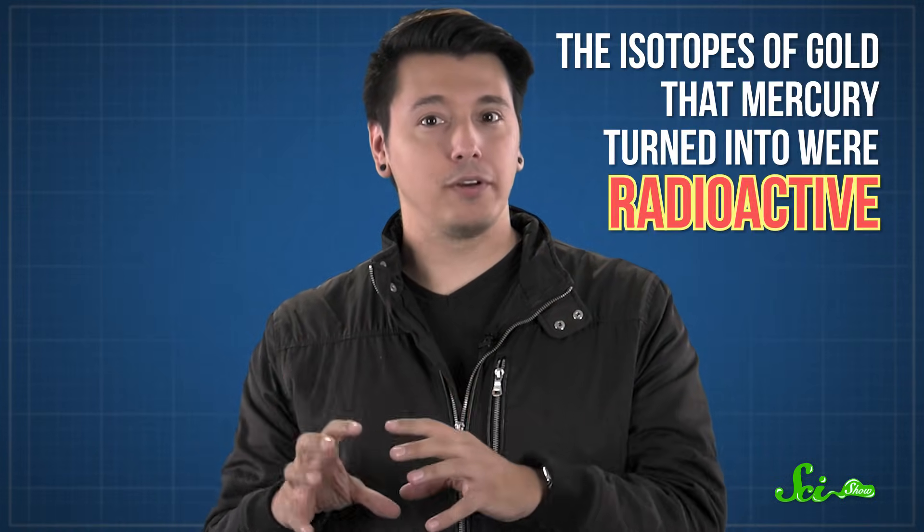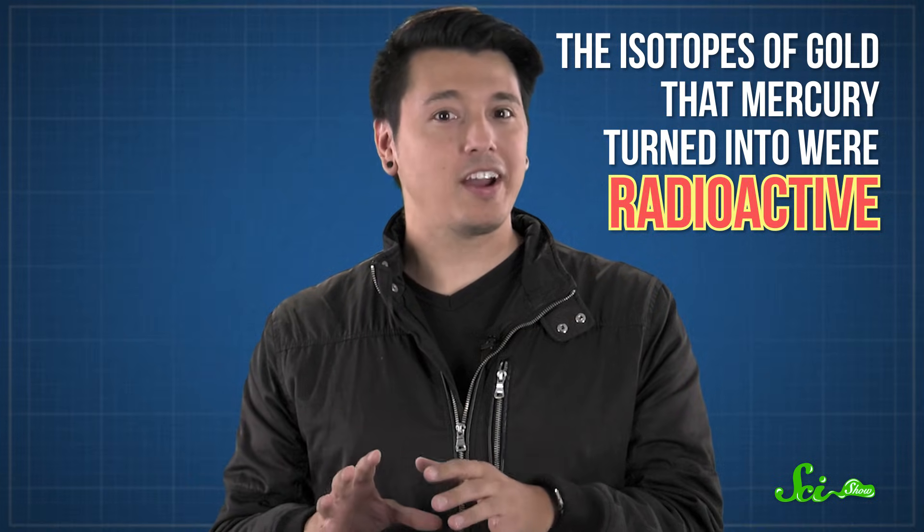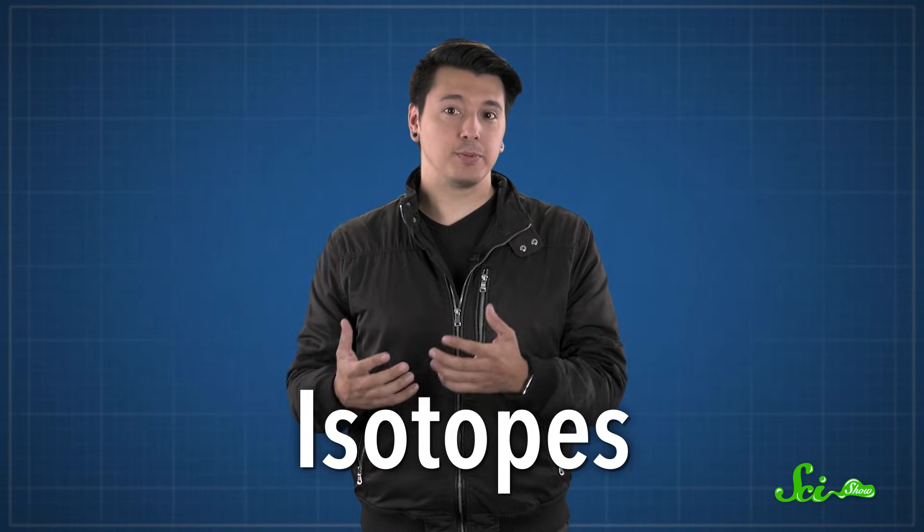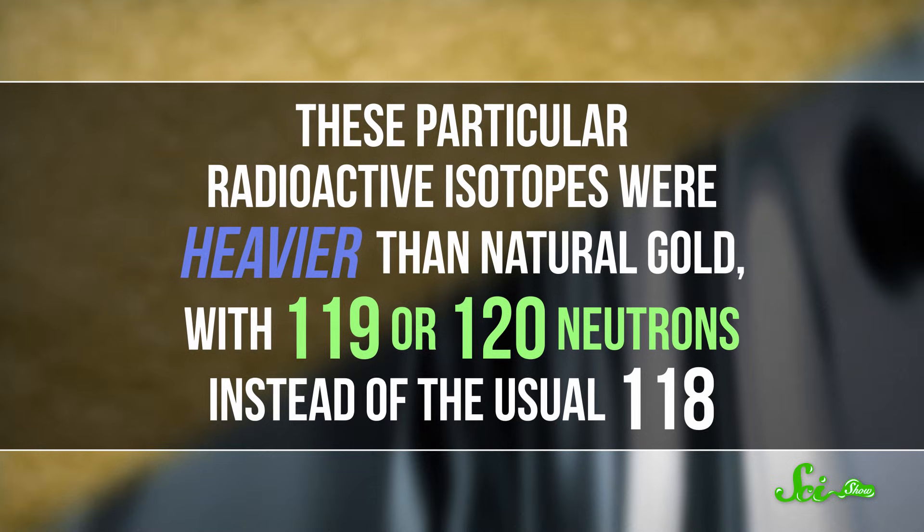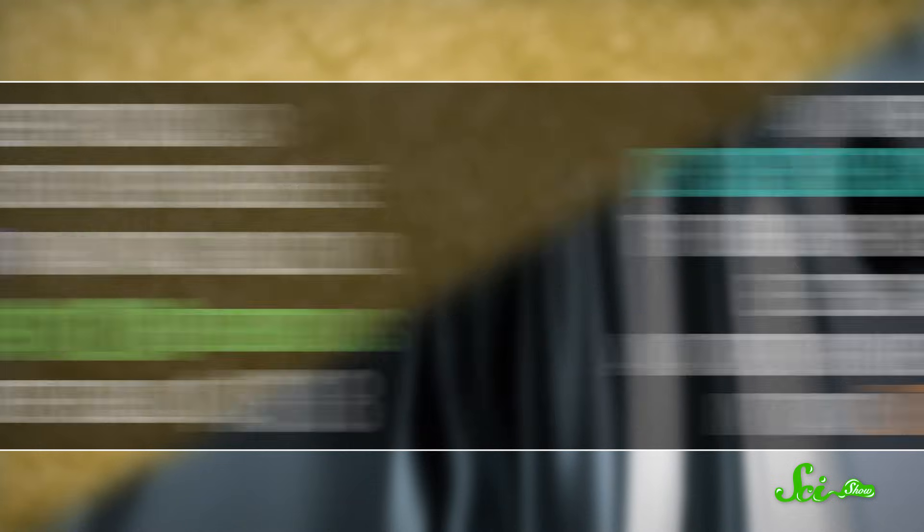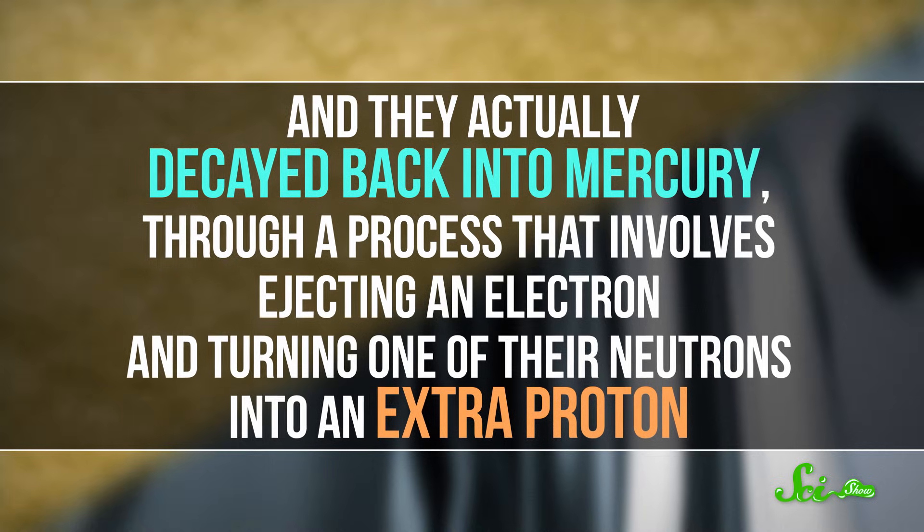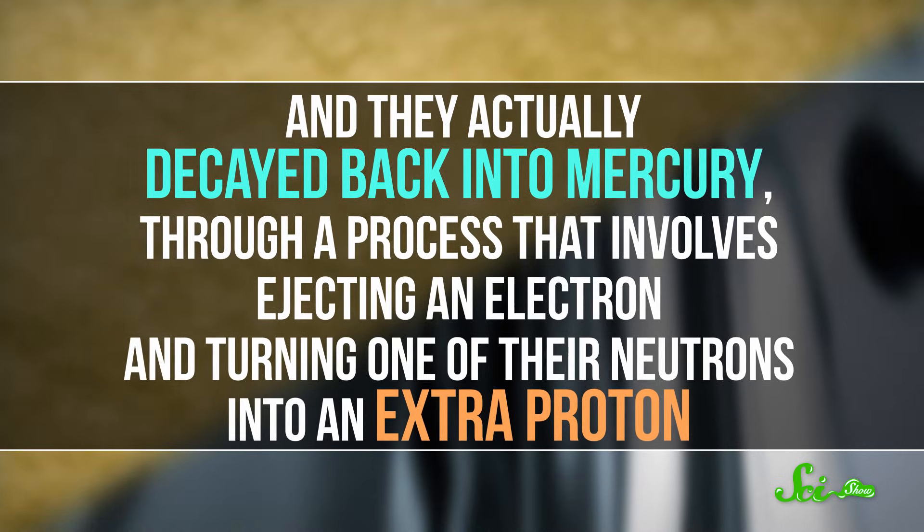Researchers weren't completely sure mercury could turn into gold until the 1940s, after they'd figured out how to force atoms to release particles by bombarding them with tons of extra energy in the form of neutrons. But there was a problem. The isotopes of gold that mercury turned into were radioactive. Isotopes are atoms that have the same number of protons, but different numbers of neutrons. They're the same element, just lighter or heavier. The isotope of gold we mine from the ground isn't radioactive, but plenty of the isotopes we can make artificially are. These particular radioactive isotopes were heavier than natural gold, with 119 or 120 neutrons instead of the usual 118. And they actually decayed back into mercury, through a process that involves ejecting an electron and turning one of their neutrons into an extra proton.